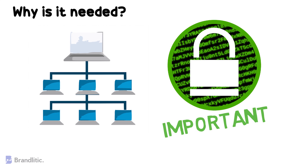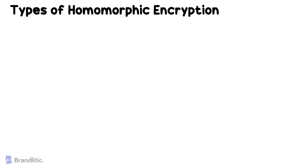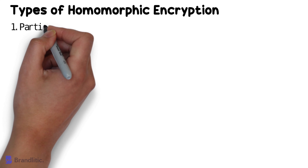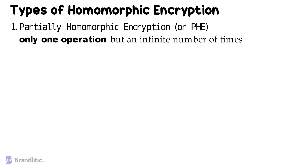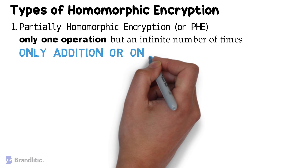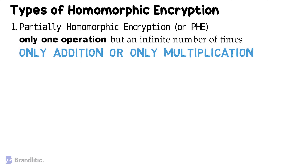Next, let's look into the different types of homomorphic encryption. The most common types include: first, Partially Homomorphic Encryption, or PHE, which allows for only one operation to be performed on the ciphertext, but an infinite number of times. This operation can only be addition or only multiplication in nature. These are a lot easier to design and are very useful in applications that use one arithmetic operation.